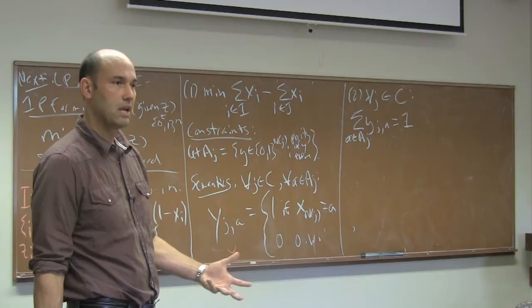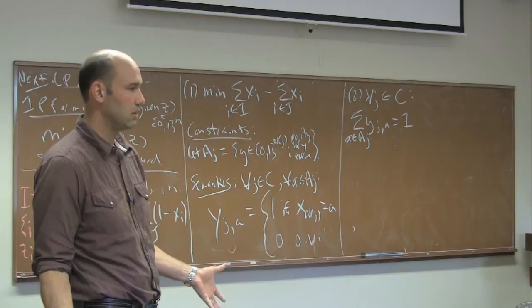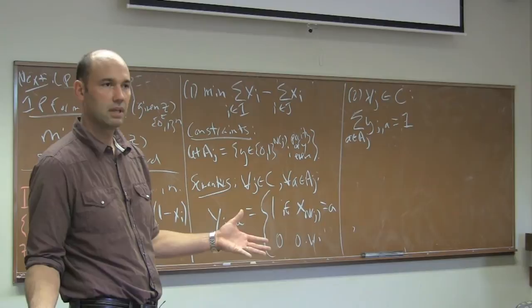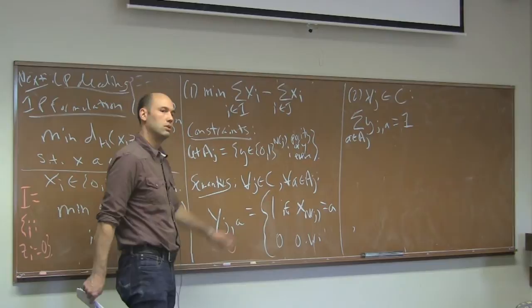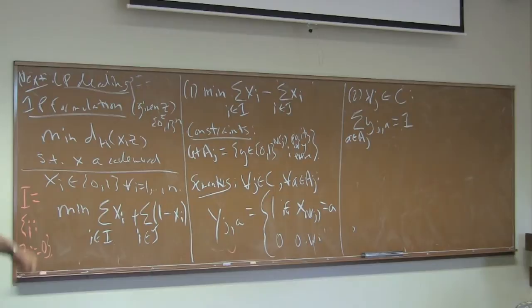This motivates the low-density part of LDPC codes. Conditions one and two said degree should be bounded — constant, like 10 or 20. It's not sensible to write down this linear program with a large number of variables in a parity check. As long as the parity checks are sparse, this is polynomial-size and polynomial-time solvable.